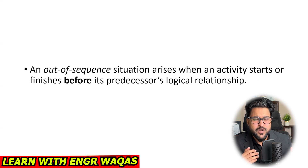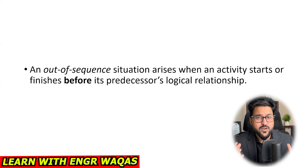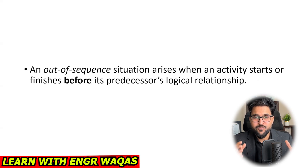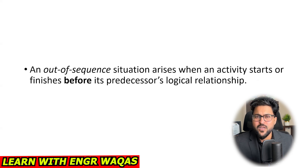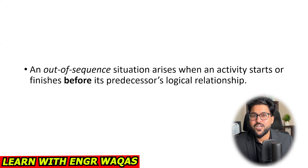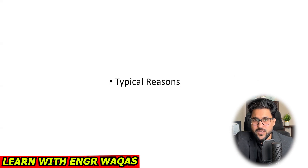When we were studying activity relationship dependency models, we understood very well that successor activities are totally dependent on predecessor activities. We already allocated all those relationships in the planning phase, but in the tracking phase the situation is different — that relationship may be overruled, which can cause an out-of-sequence activity situation.